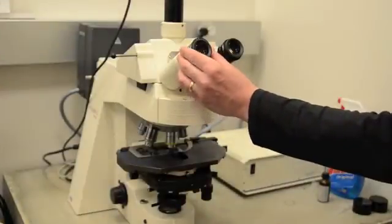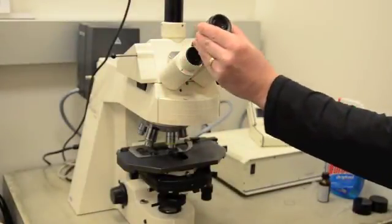Remove one of the eyepieces. With your eye about 20 cm from the eyepiece, adjust the condenser iris diaphragm so the light fills about 75% of the field of view.